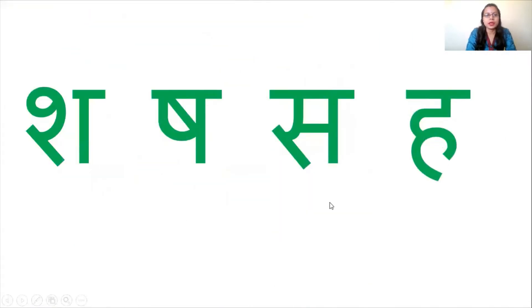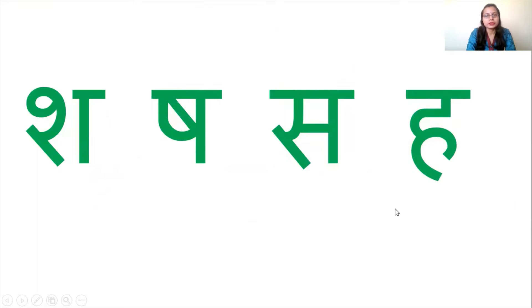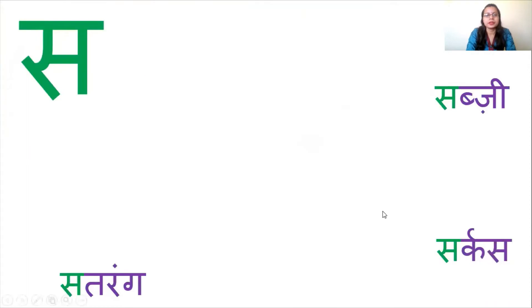This line has four letters: sh, sh, sa, and ha. We are doing the last two letters — sa and ha — today. First of all we will do the letter sa.